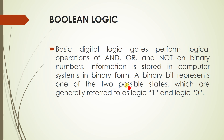Basic digital logic gates perform logical operations such as AND, OR, and NOT on binary numbers. Since a computer system is made up of binary numbers — called machine language — the only language the computer understands is 1 and 0. Information is stored in a computer system in binary form. A binary bit represents one of two possible states, generally referred to as logic 1 and logic 0.